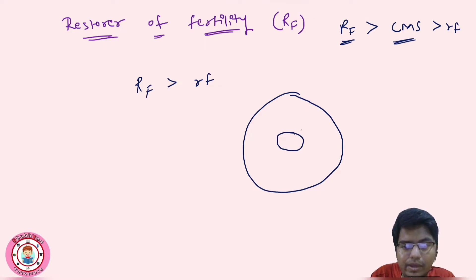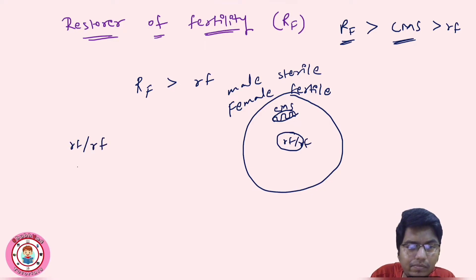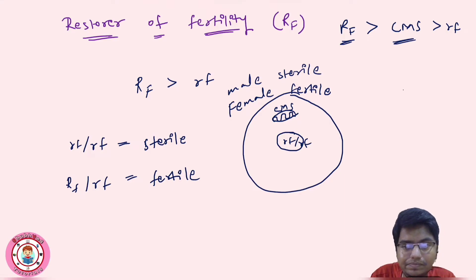Let me draw a cell here. This is a nucleus, and here is the mitochondria. The mitochondria is carrying CMS. In this condition, as a female the plant is fertile, but as a male it is sterile. If this CMS plant has the rf factor in the heterozygous condition — small rf small rf — then this plant is sterile as a male.